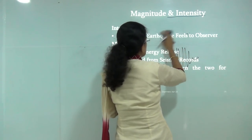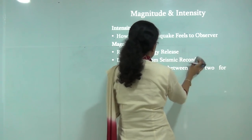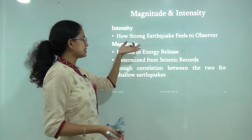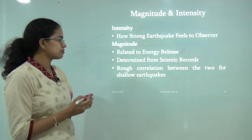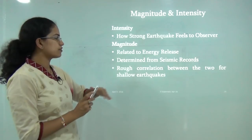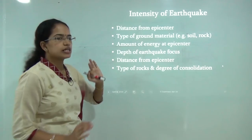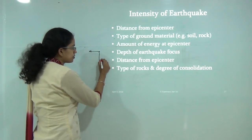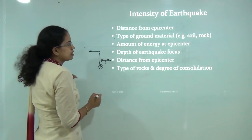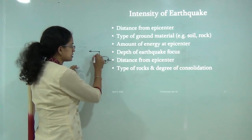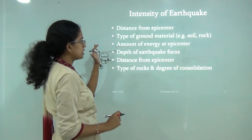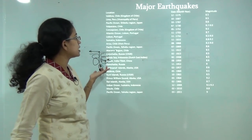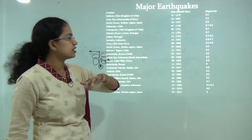Magnitude and intensity are distinct: intensity is how strong an earthquake appears to an observer, while magnitude is the amount of energy released from the interior of the earth, determined by seismic records. Intensity depends on distance from the epicenter, depth of the focus, the type of underlying rocks (strong rocks reduce impact), and the amount of energy dissipated towards the epicenter.